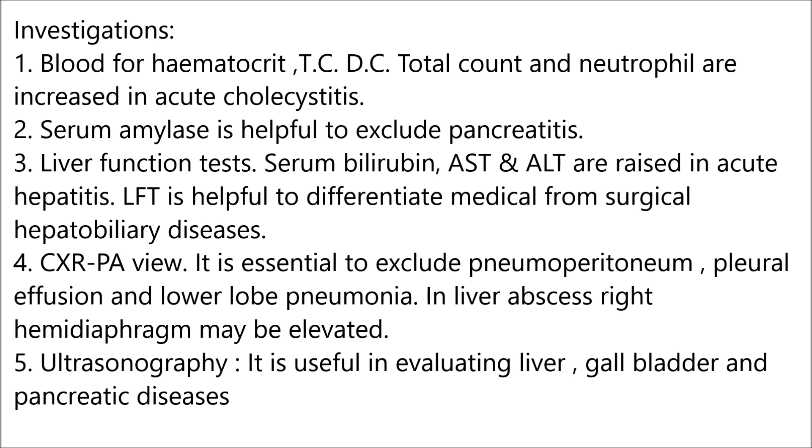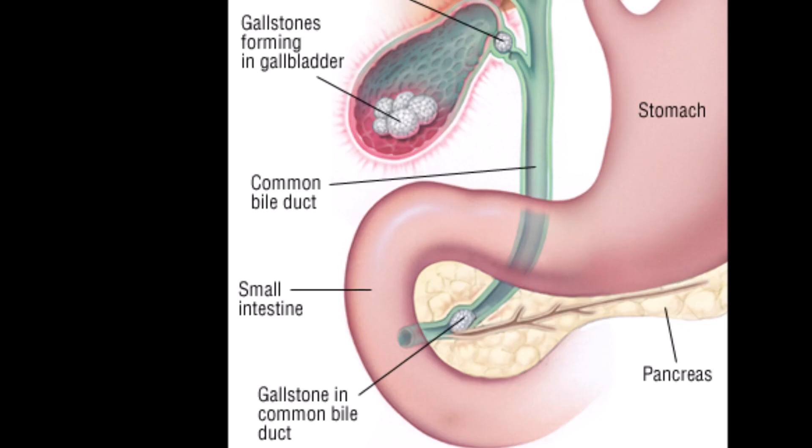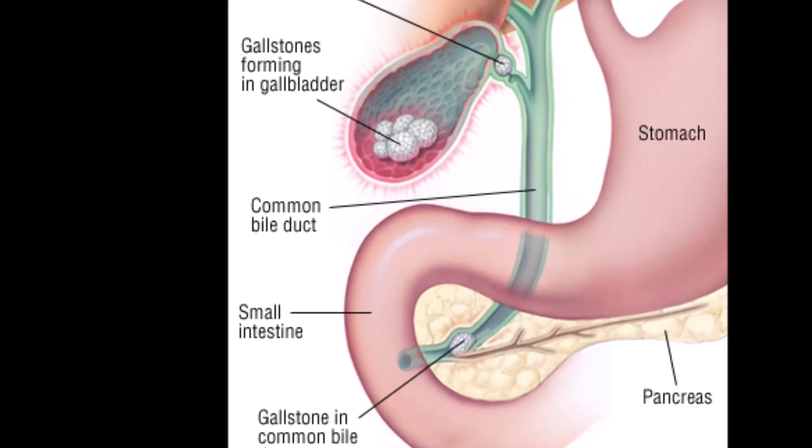In investigations, blood for hematocrit, total count, differential count — total count and neutrophils are increased in acute cholecystitis. Serum amylase is helpful to exclude pancreatitis. Liver function tests — serum bilirubin, AST, and ALT are raised in acute hepatitis. Liver function test is helpful to differentiate medical from surgical hepatobiliary disease. Chest X-ray in PA view is essential to exclude pneumoperitoneum, pleural effusions, and lower lobe pneumonia. In liver abscess, the right hemidiaphragm may be elevated. Ultrasound is useful in evaluating liver, gallbladder, and pancreatic disease.